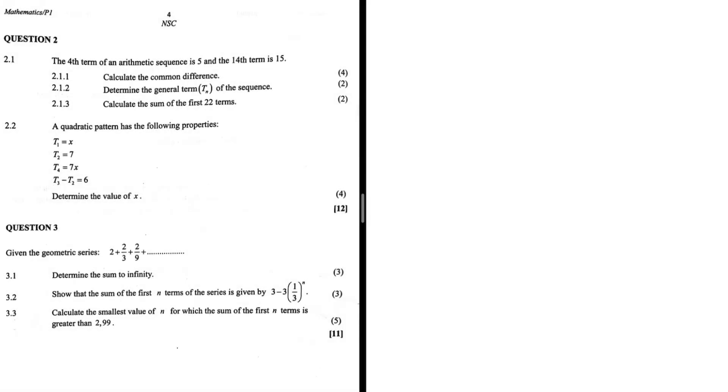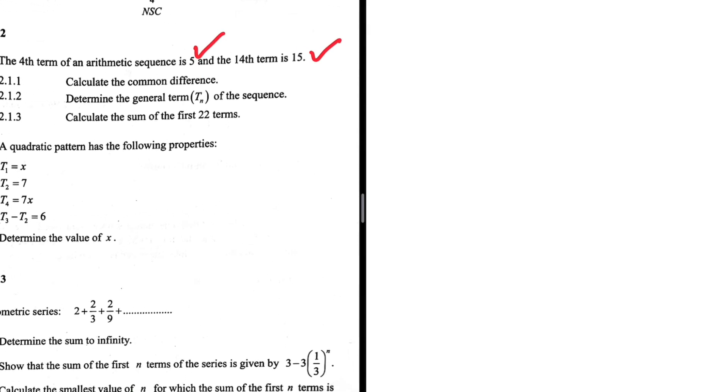The fourth term of an arithmetic sequence is 5 and the 14th term is 15. This is quite a basic question. We expect this kind of problem in sequences and series. Question 2.1.1: Calculate the common difference. Let's take a look at what we are given and make sense of it.